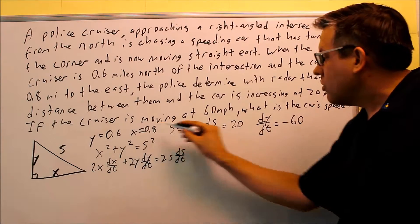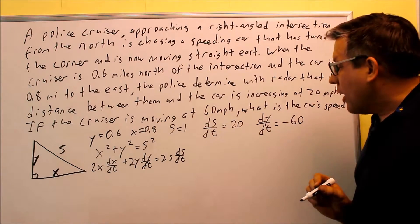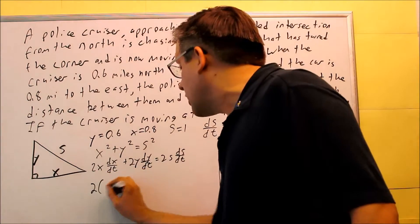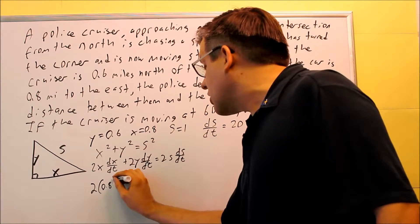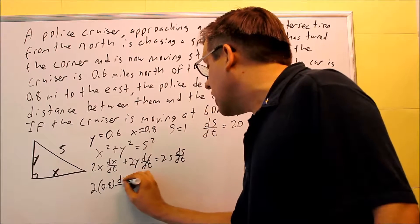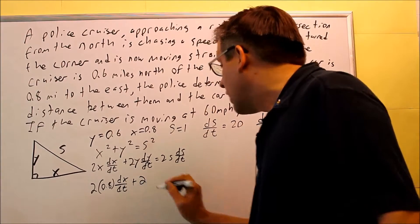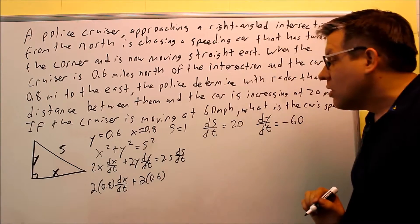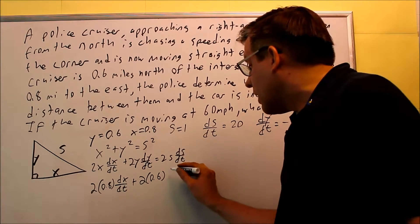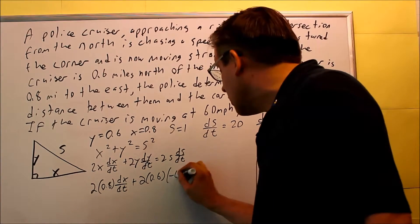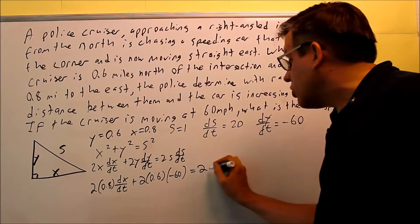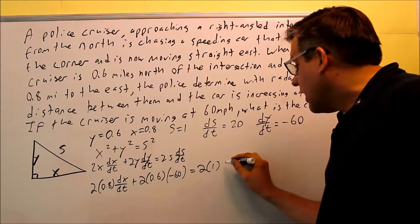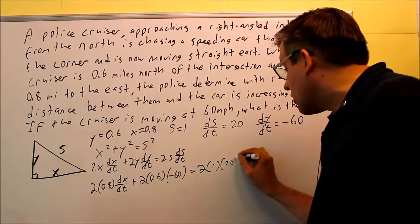Okay, now we're ready to put in all this information that we found, and we're going to be solving for DX/DT. So, this first one I have 2, and then instead of the X, I want to put in 0.8, since that's what was given. We mentioned that DX/DT is what we're trying to solve for. Then I have 2 times the Y. The Y is going to be 0.6, and then I have times DY/DT, negative 60. Okay, equals 2 times S. So again, we did have to use that S there. We found that already. That's 1. And then DX/DT is given as 20.